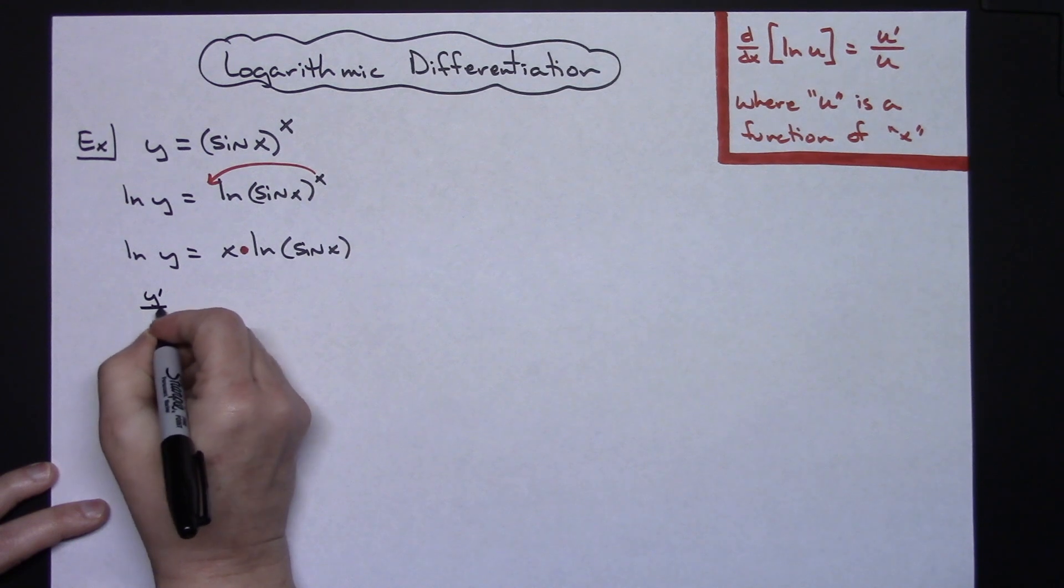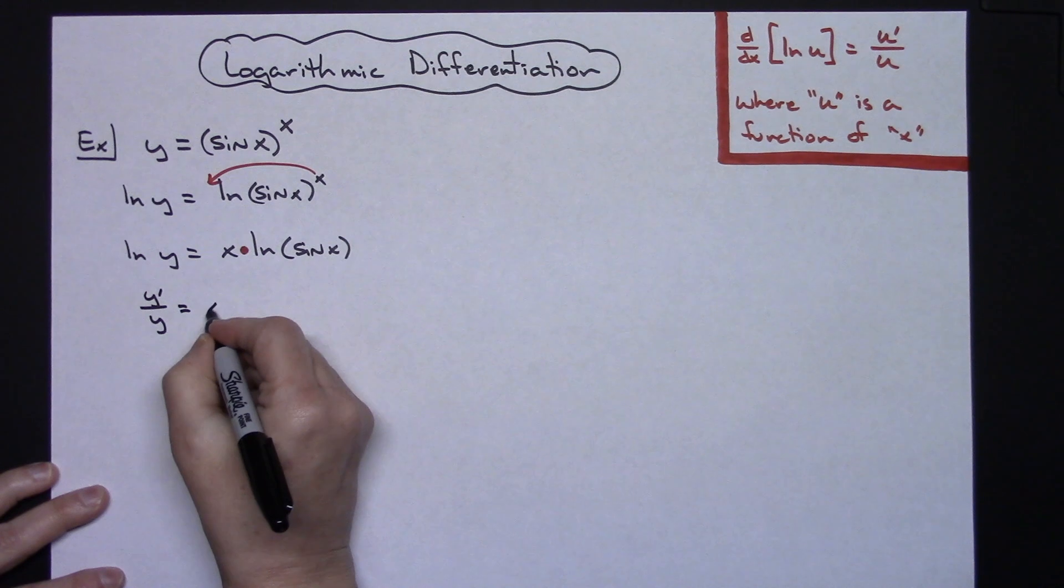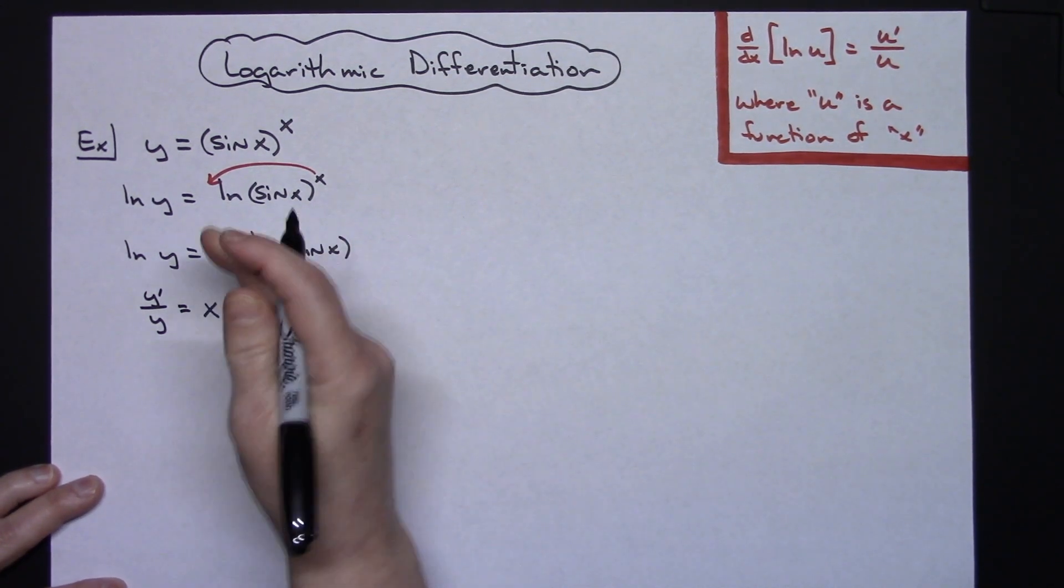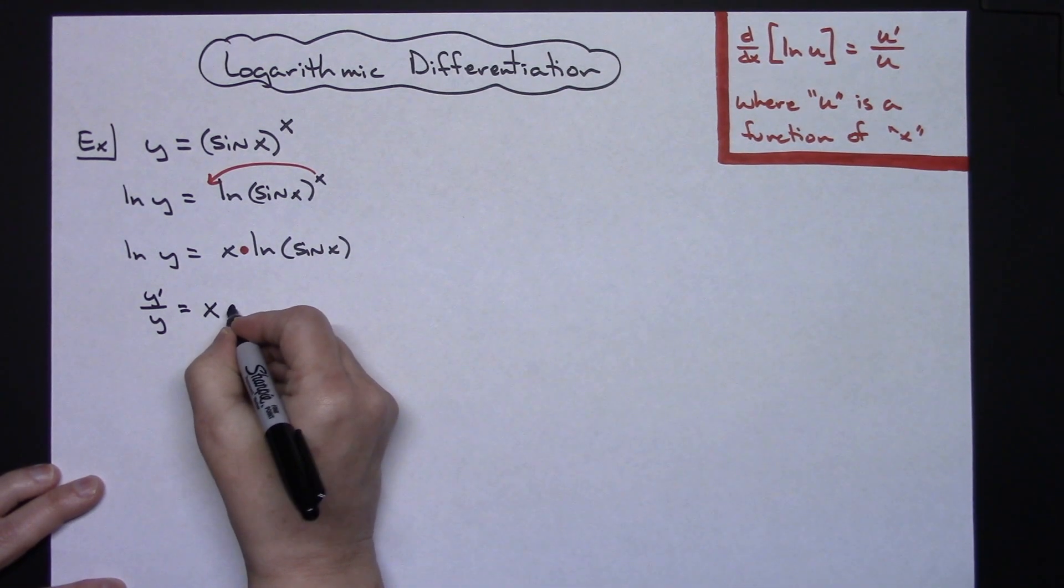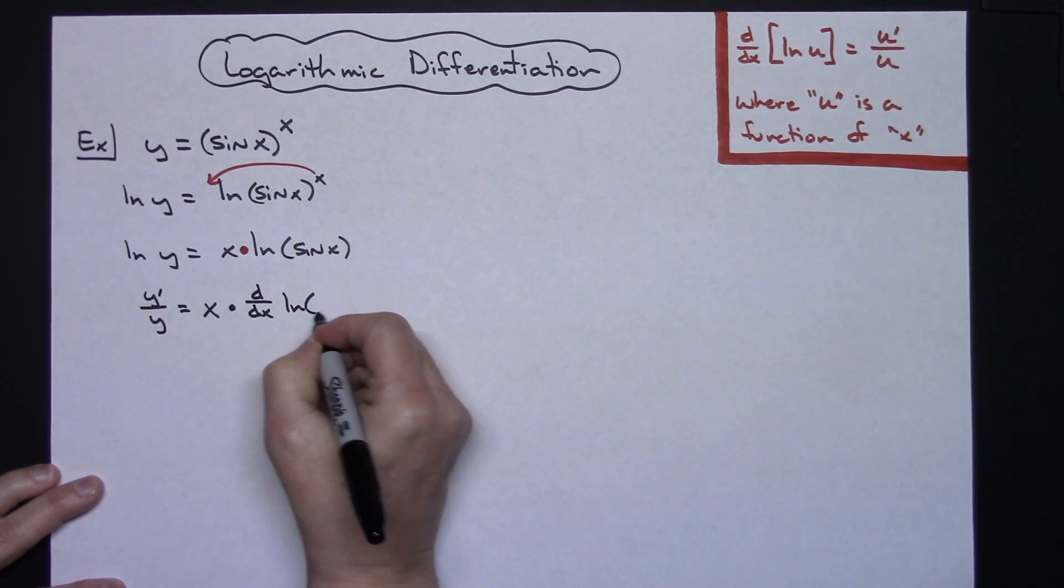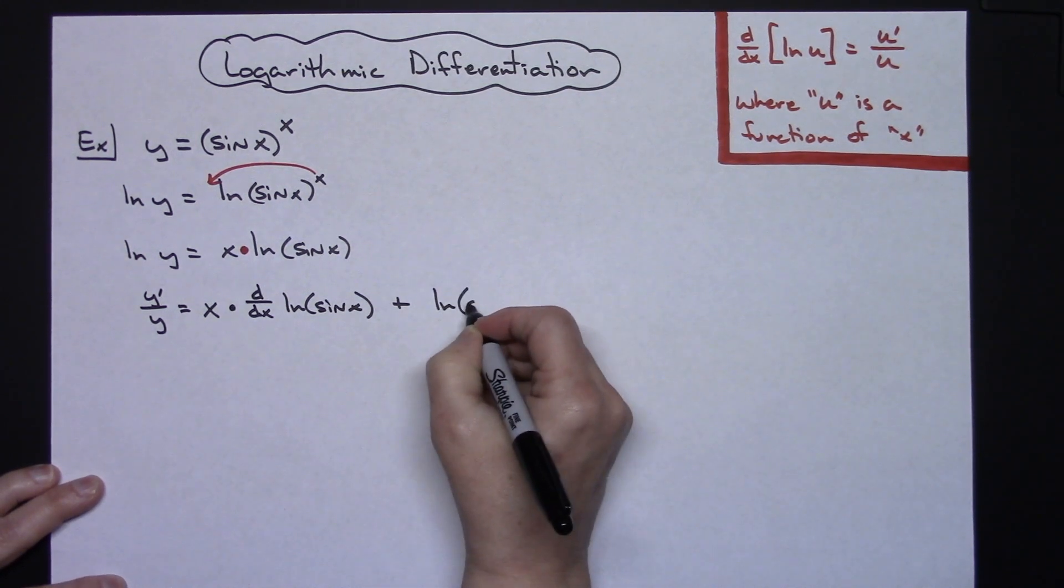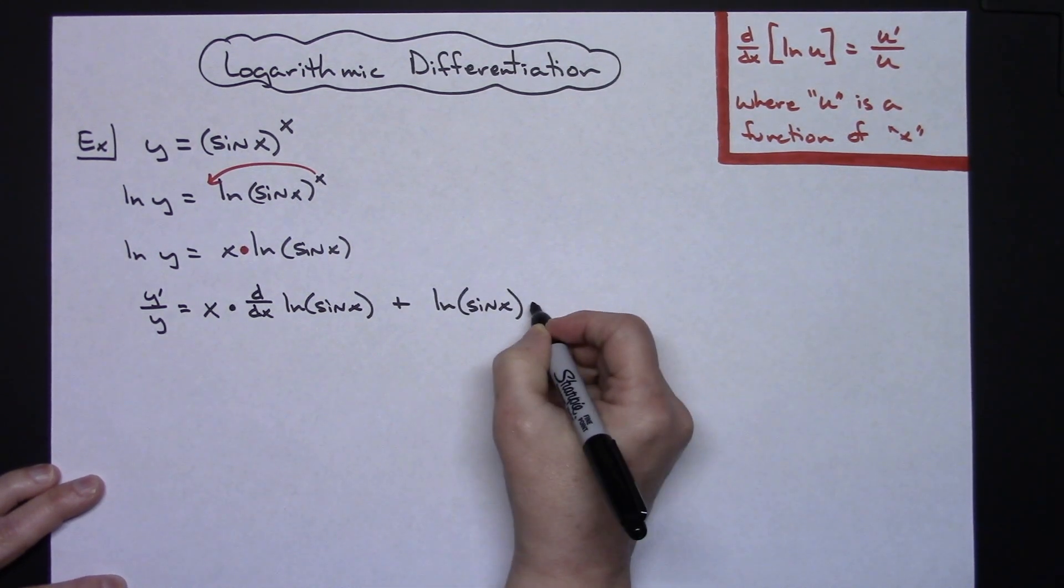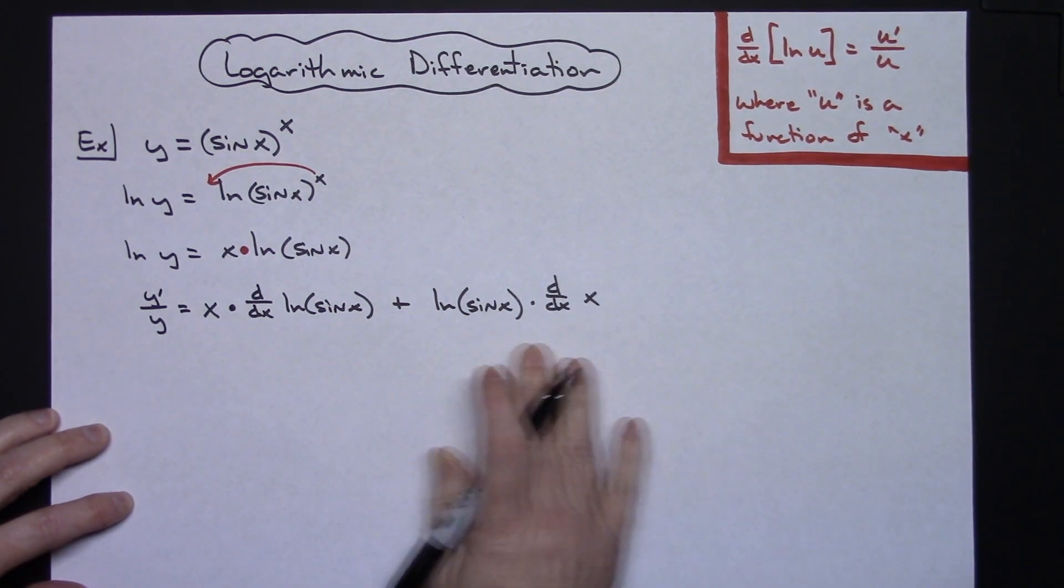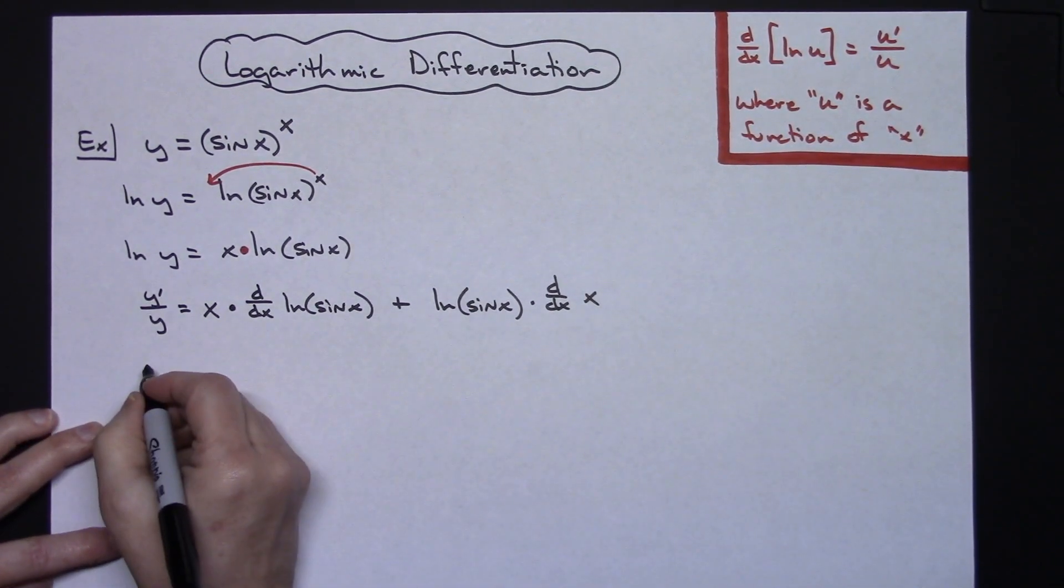Natural log of y using my formula over here is going to give me y prime over y equals - now I'm going to do product rule. So I'm going to have x times the derivative d/dx of natural log of sine x, plus the natural log of sine x times the derivative d/dx of x. Again for the beginning calc student that's going to help line out the fact that you are doing that product rule.